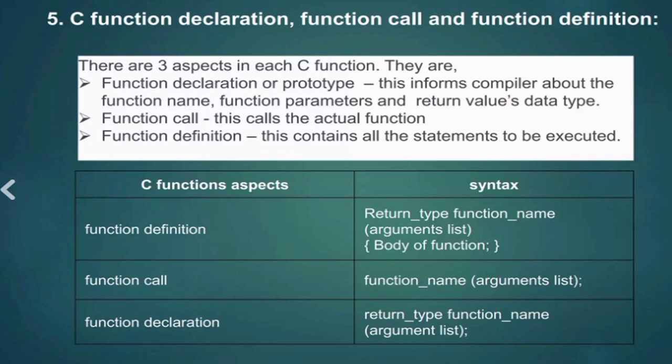Next, C function declaration, function call and function definition. There are three aspects in each C function. They are the function declaration or prototype informs compiler about the function name, function parameters and return values data type.